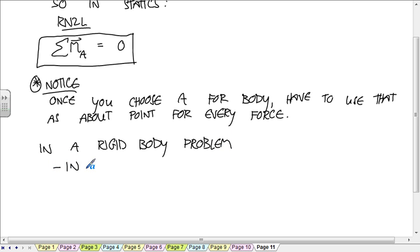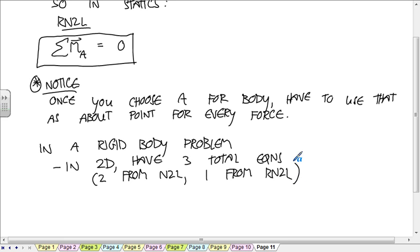In a rigid body problem, if it's a two-dimensional problem, so in 2D, you have three total equations. So, where do those equations come from? You have two equations from Newton's second law, because that's a vector equation. And then you have one useful equation for RN2L. That's because only the Z component is non-zero. The other two just say zero equals zero. It doesn't help you at all. So one from RN2L. If you're doing a 3D rigid body problem, you have a total of six equations. And that's three from Newton's second law and three from the rotational equation.